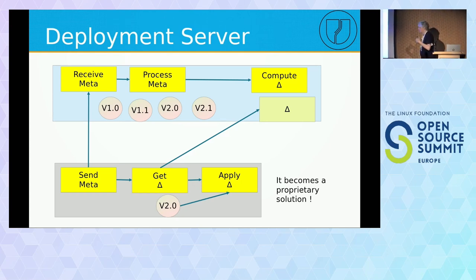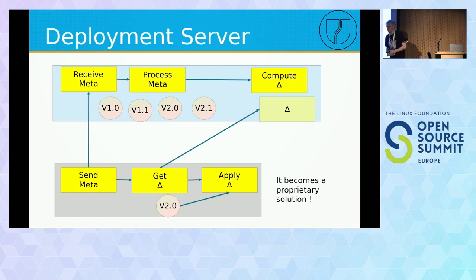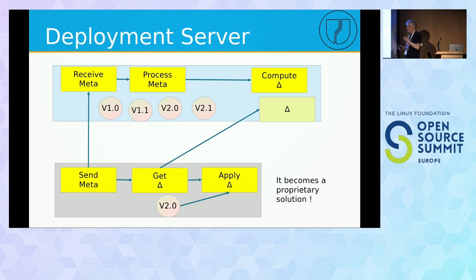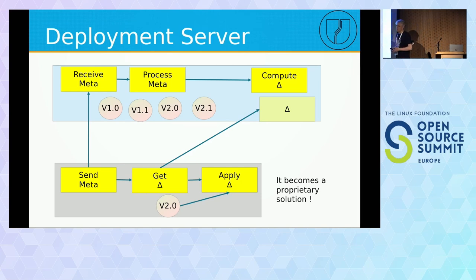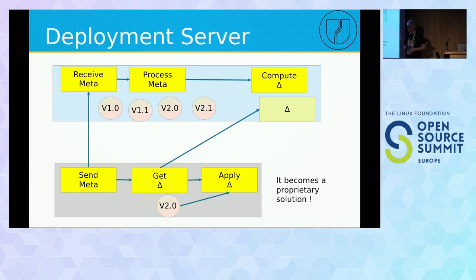I started thinking about the actors involved. A simple server approach: the device sends its version to a server, the server has all possible versions, computes the delta, and sends it back. But this has many drawbacks: the server needs knowledge of many versions and their internals, and if you use a different server — Hawkbit or another — you need a different implementation. That is very bad.